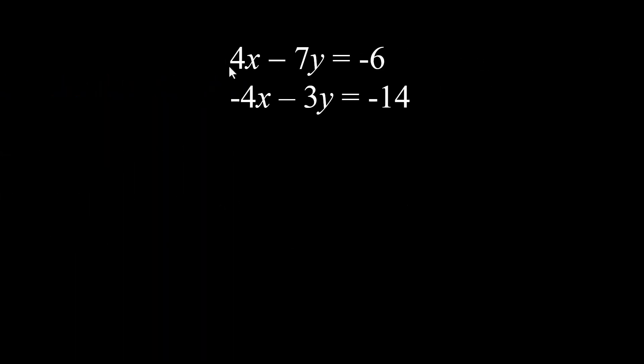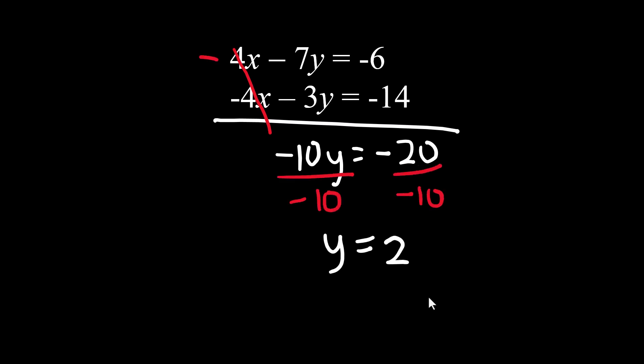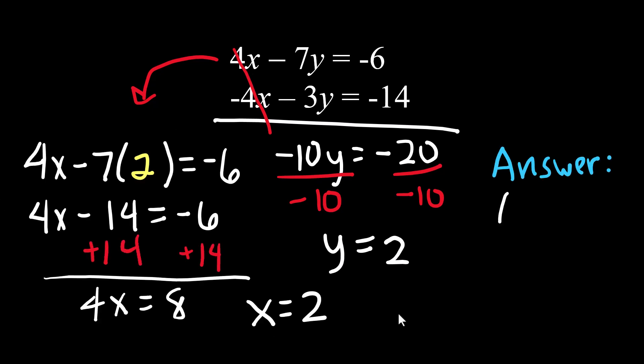So here's that same problem, positive 4x and this minus 4x. If you were to smash these two equations together, they would cancel out. Combine like terms, negative seven and a negative three is a negative 10y. Negative six and a negative 14 is a negative 20. However, we end up with y equals two. This little arrow is indicating that I am going to use this first equation, plug the y in, and solve for x. x equals two and y equals two.